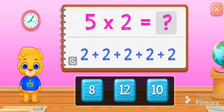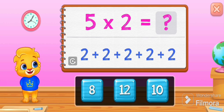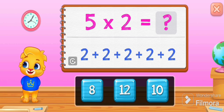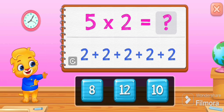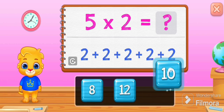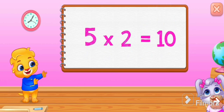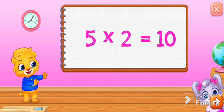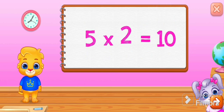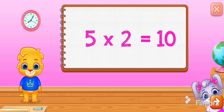Five times two equals two plus two plus two plus two plus two. Ten! Five times two equals ten.